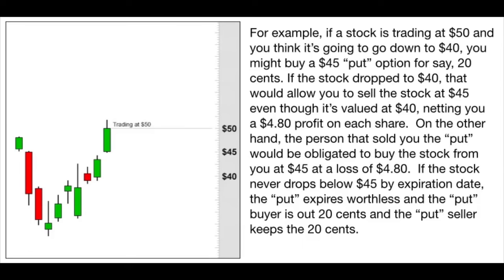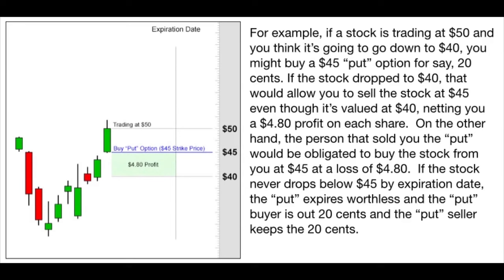For example, if a stock is trading at $50 and you think it's going to go down to $40, you might buy a $45 put option for 20 cents. If the stock dropped to $40, that would allow you to sell the stock at $45, netting you a $4.80 profit on each share. The person who sold you the put would be obligated to buy the stock from you at $45, at a loss of $4.80. If the stock never drops below $45 by expiration, the put expires worthless — the buyer is out 20 cents and the seller keeps the 20 cents.